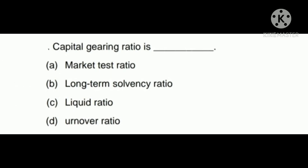Capital gearing ratio is — A) market test ratio, B) long-term solvency ratio, C) liquid ratio, D) turnover ratio. Capital gearing ratio = total debt / total equity, which makes it a long-term solvency ratio. Option B is the correct answer.